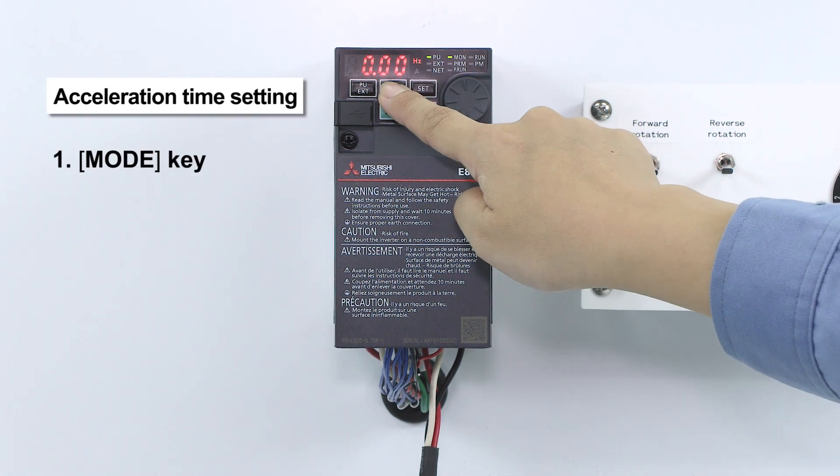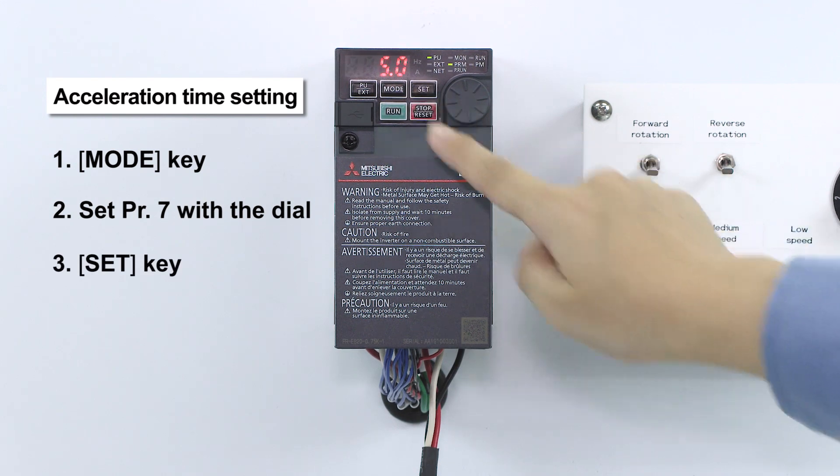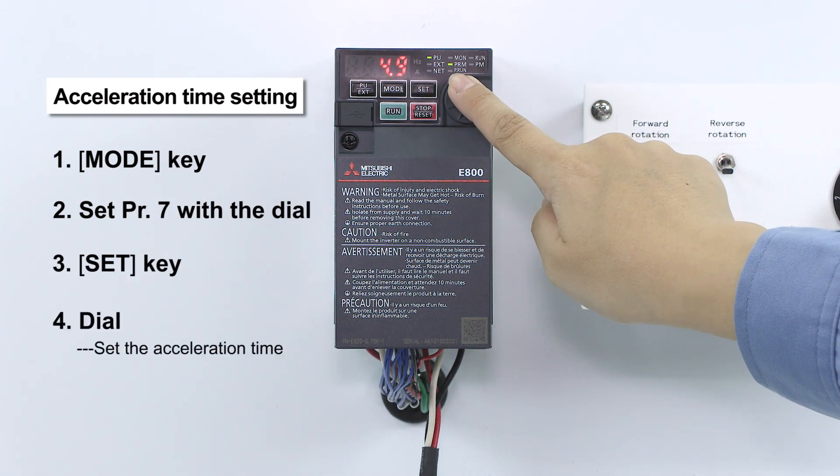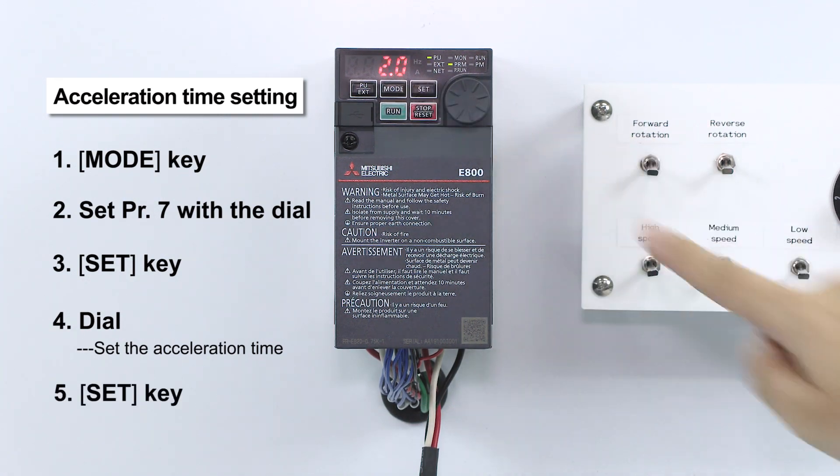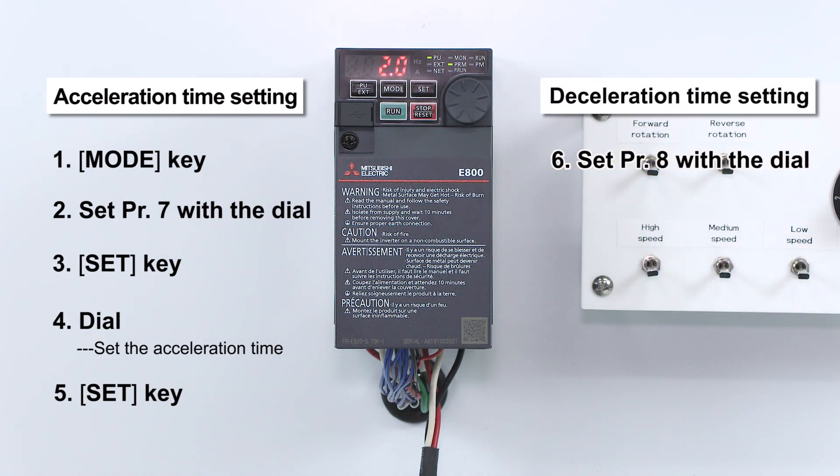Select parameter setting mode and turn the dial to 7. Parameter 7 controls the acceleration time from when the motor starts until it reaches the selected frequency. Parameter 8 controls the deceleration time from the selected frequency until the motor stops.